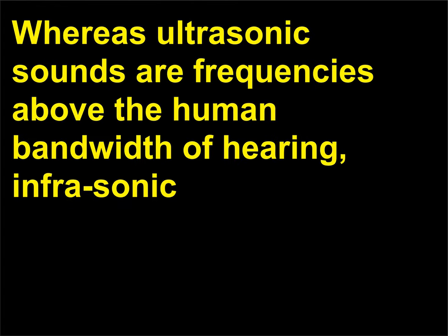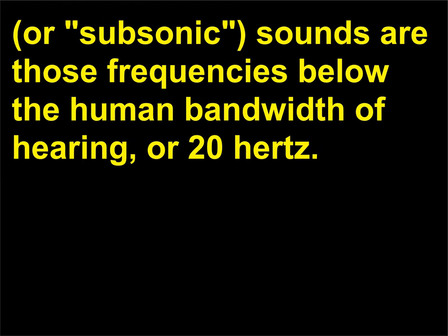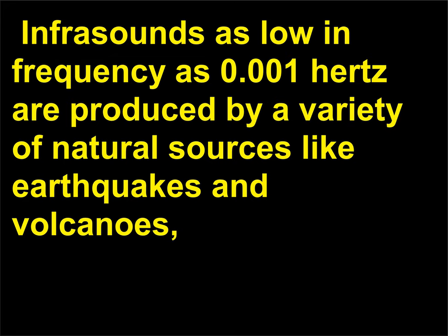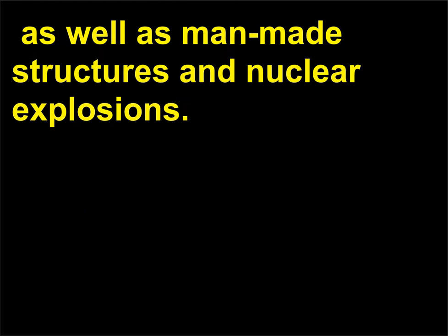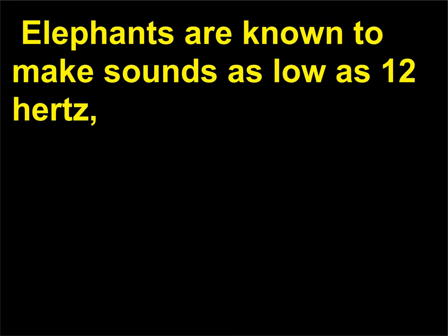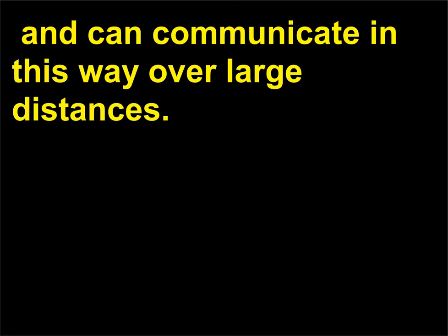What is infrasound? Whereas ultrasonic sounds are frequencies above the human bandwidth of hearing, infrasonic (or subsonic) sounds are those frequencies below the human bandwidth of hearing, or 20 Hz. Infrasounds as low in frequency as 0.001 Hz are produced by natural sources like earthquakes and volcanoes, as well as man-made structures and nuclear explosions. Elephants are known to make sounds as low as 12 Hz and can communicate in this way over large distances.